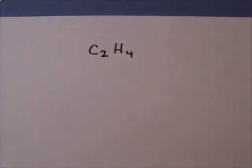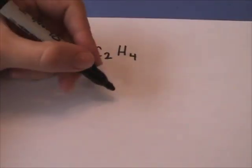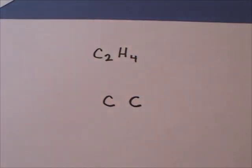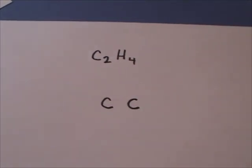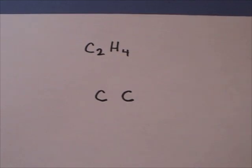Now let's draw the Lewis structure for C2H4. We know that the carbons are going to have to be in the center, and the hydrogens are going to have to surround those carbons. You want to try to put them as symmetrically as possible.